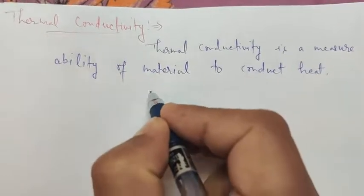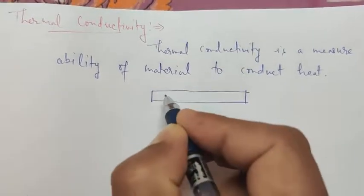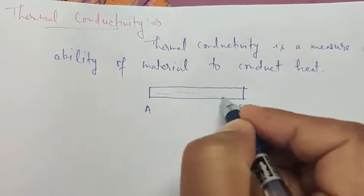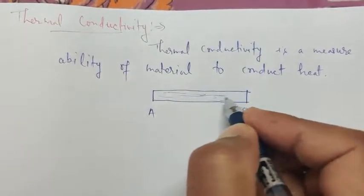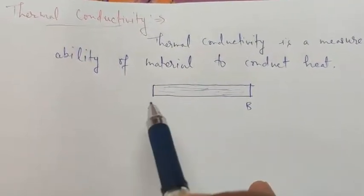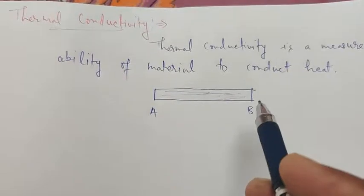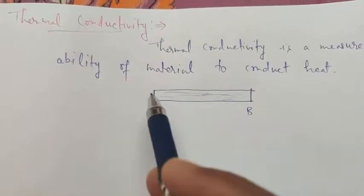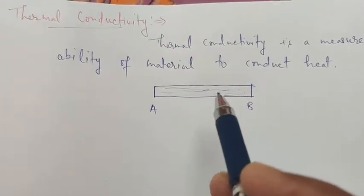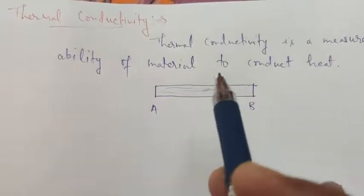To explain this simply, consider a conducting or metallic rod having ends A and B. If there is no temperature difference at the ends A and B — that is, they are at the same temperature — there will be no transfer of heat or energy, because the temperature of the whole metallic rod is the same. The rod is in thermodynamic equilibrium, so there is no transfer of energy.